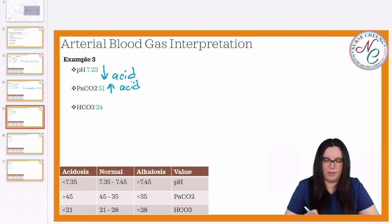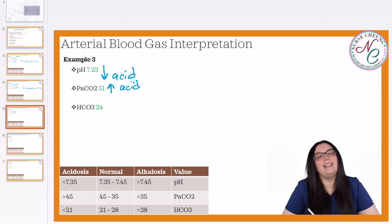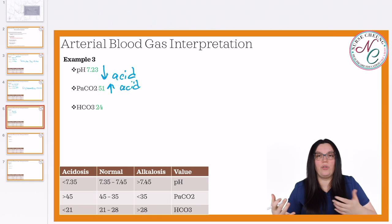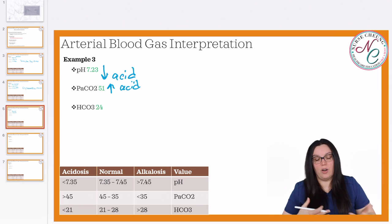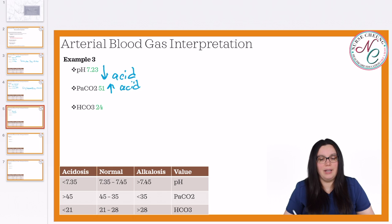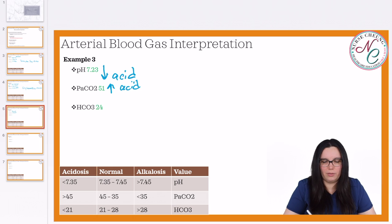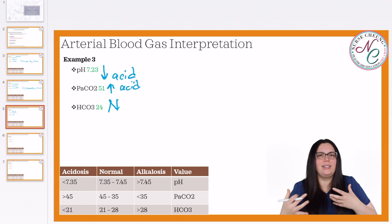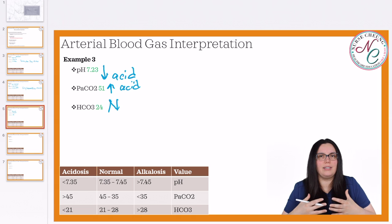So we're going to be in an acidotic state when it comes to our PaCO2 component of the arterial blood gas. Lastly, we need to take a look at our HCO3, our bicarb. Normal is 21 to 28. So a value of 24 is actually neutral — this value is a neutral value.